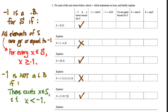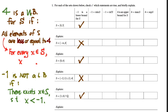What if I change lower bound to upper bound? Now instead of negative 1, we're going to think about the number 4. So 4 is an upper bound for S if what? How would I write that? All elements of S are less than or equal to 4. So for every X in the set, X is less than or equal to 4. That's the definition of 4 being an upper bound for S.